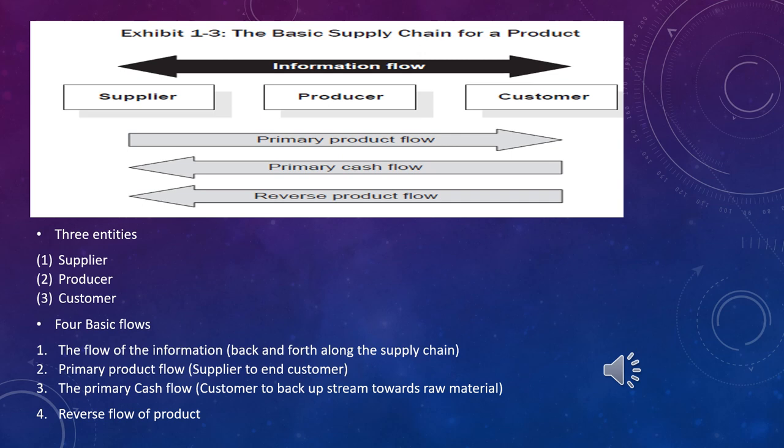Then we come to the primary product flow — the raw material is physically given to the producer, converted into a product, and then physically delivered to the customer or end user. Then we have the primary cash flow, which moves from the customer to the producer, then to the supplier.